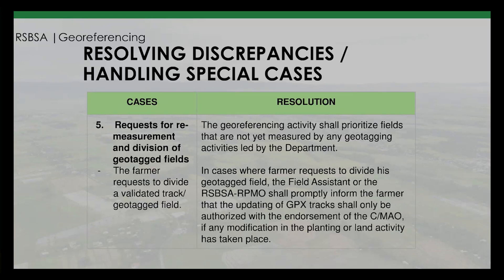Case 5 — requests for re-measurement and division of geotagged fields: a farmer requests to divide a validated geotagged field. Resolution: the geo-referencing activity shall prioritize fields not yet measured. In cases where a farmer requests to divide a geotagged field, the field assistant or the RSBSA RPMO shall inform the farmer that updating of GPX tracks shall only be authorized with the endorsement of the C/MAO if any modification in planting or land activity has taken place.